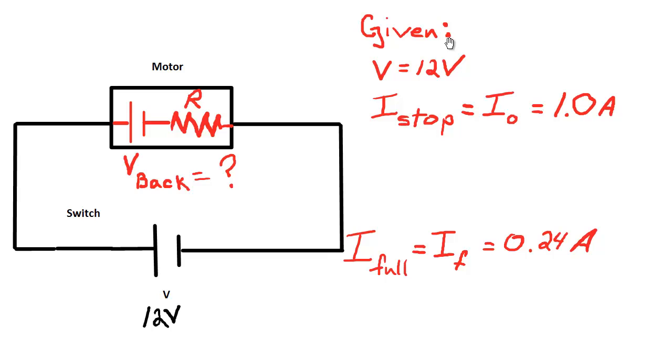Our given information is as follows. The voltage across the entire motor was 12 volts, and the stop current when you actually seized up the motor was 1 amp.